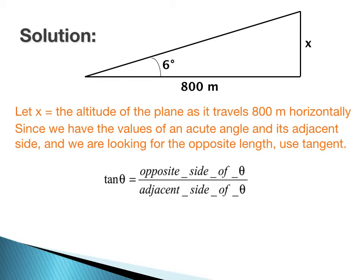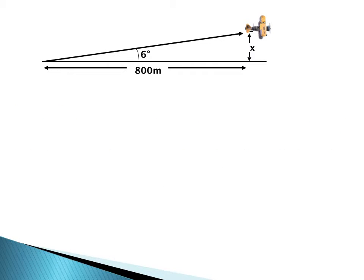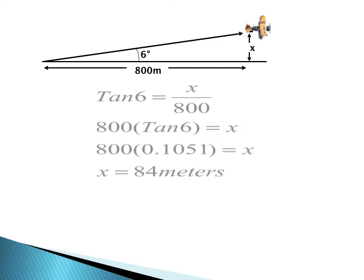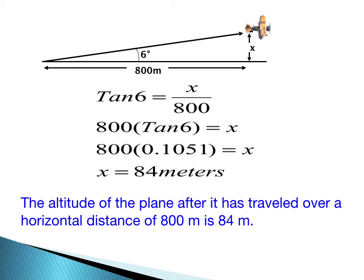The only unknown we have is x. Tangent of 6 equals x over 800. We can solve for x and it's 84 meters. So the altitude of the plane after it has traveled over a horizontal distance of 800 meters is 84 meters.